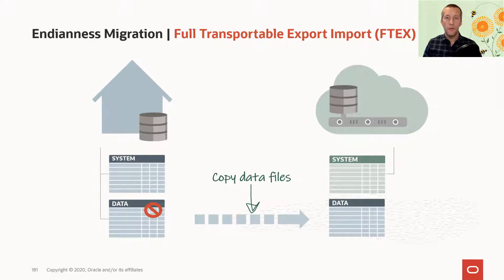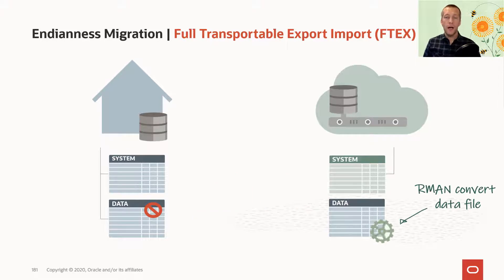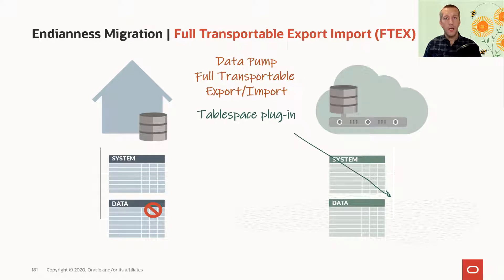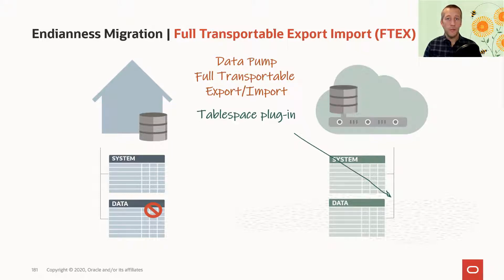Note that on the target platform the tablespace is still blue because it's in the wrong endian format. But we can use RMAN to convert the data file from big endian format to little endian format. And once we've done that, we can complete the migration. We'll be using Datapump and full transportable export/import. The first operation that Datapump does is to identify the data files that make up the tablespace and then plug in the tablespace.